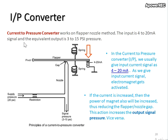Here, the output will be equivalent to 3 to 15 PSI. So basically, how does this mechanism work as we increase the input current signal from 4 to 20 milliamp?